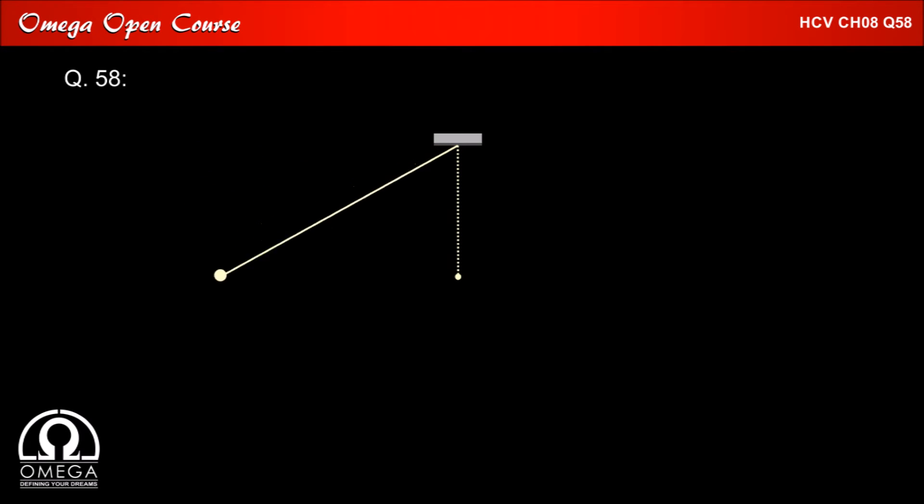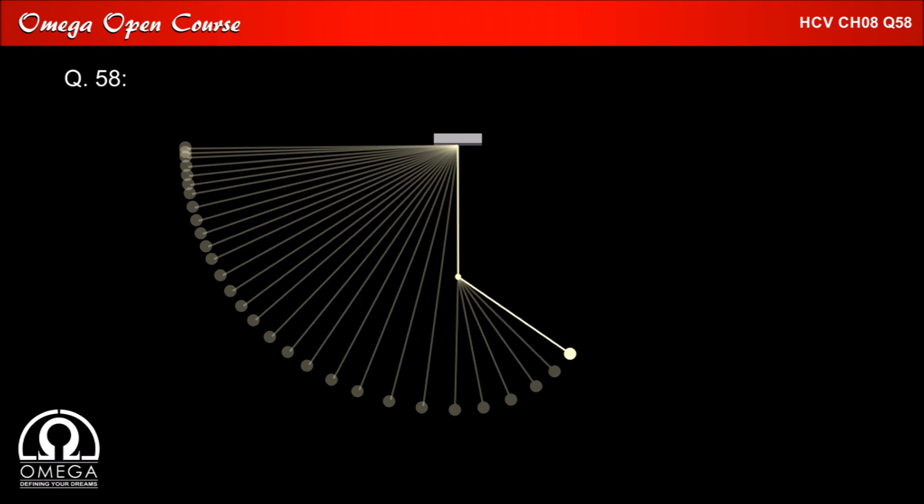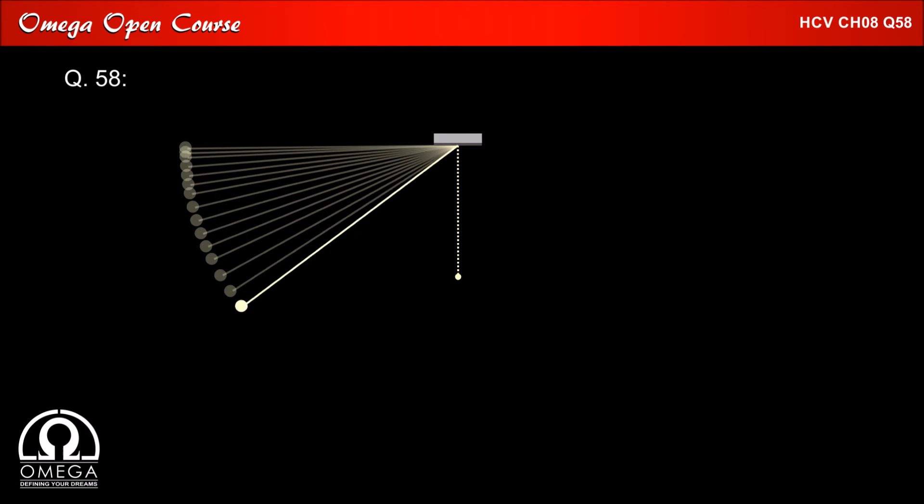For the second part of the question let us first look at the animation for this situation. Now let us look at the motion in greater detail. As the bob moves up its speed decreases and after a point when centrifugal force acting on it is insufficient to overcome the gravity the string becomes slack.